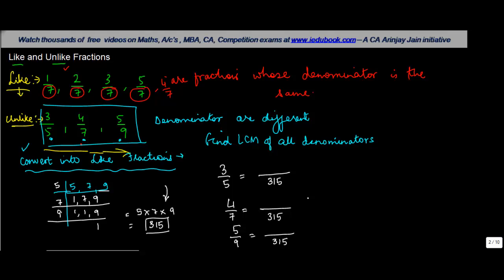Now if you notice, 5 has been multiplied by 7 and 9 to get 315, right? If you have to get a fraction which is equal to this left-hand fraction, you have to multiply 3 also by 7 and 9.